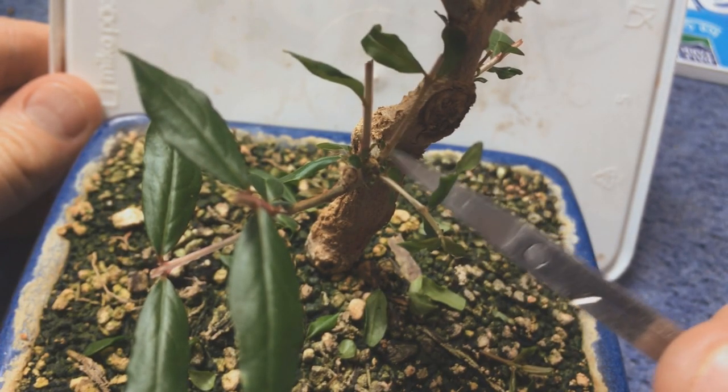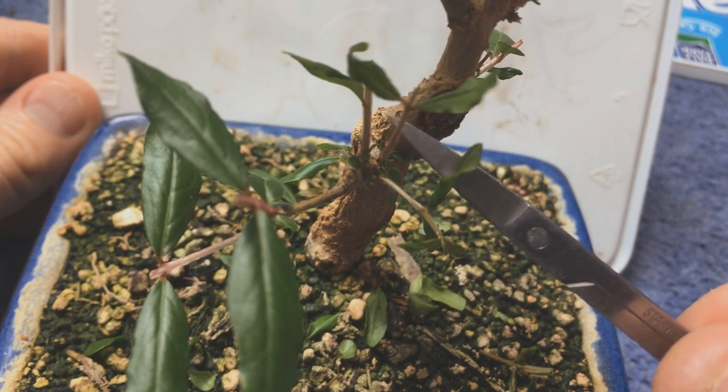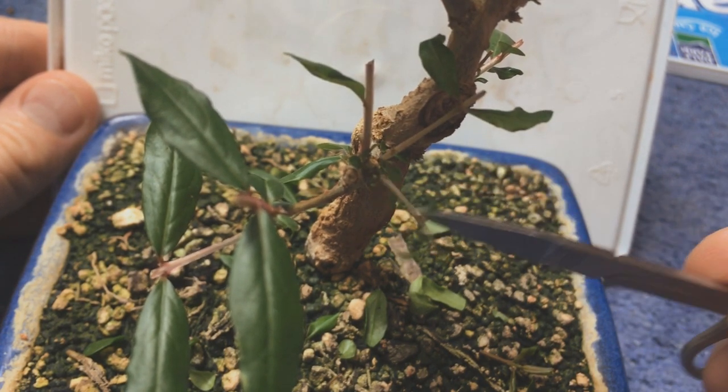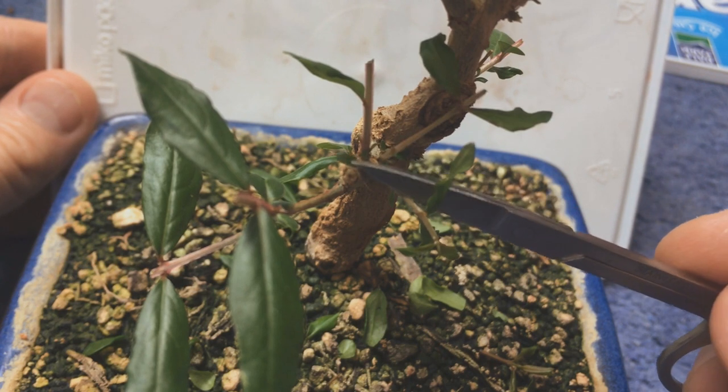Here I'm trying to show you that there's multiple shoots coming from one spot. It's not super clear but hopefully you get the idea. Basically you need to get rid of some of these and just leave two.